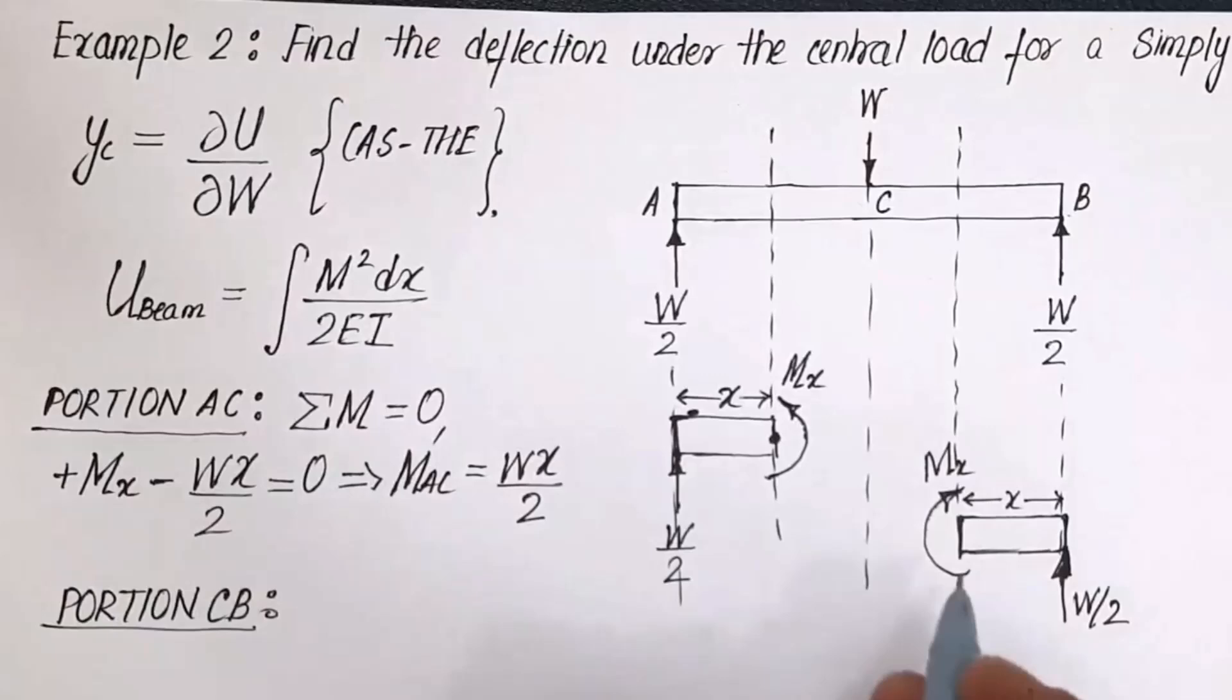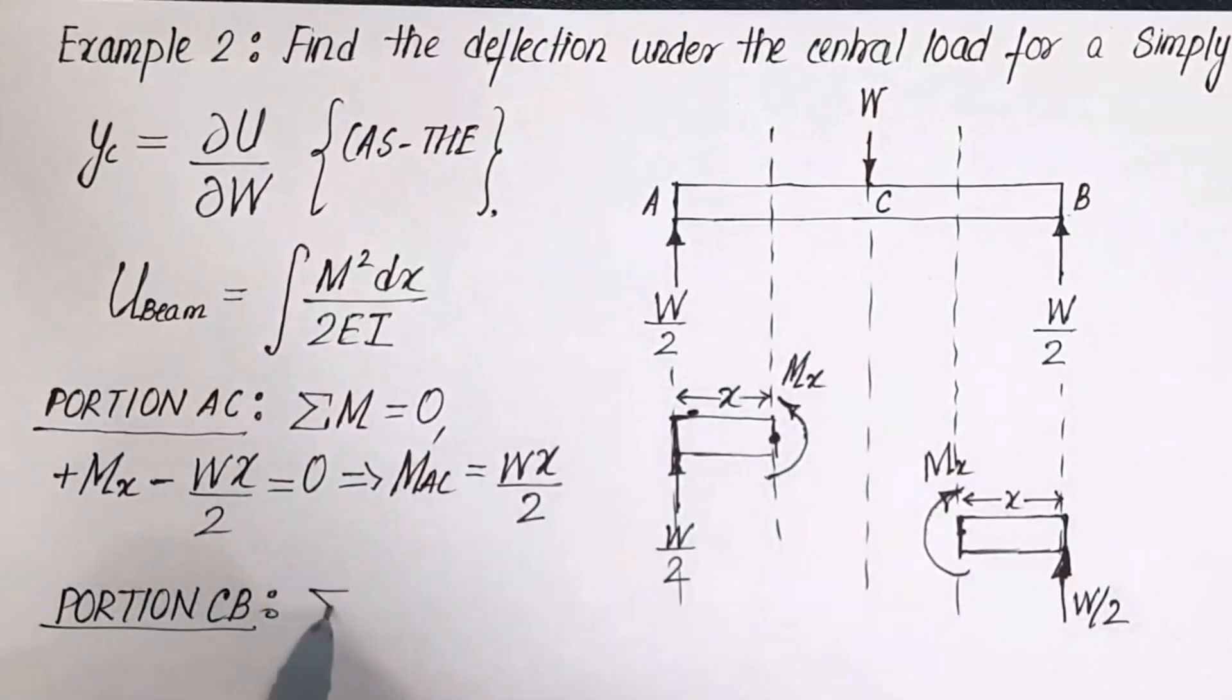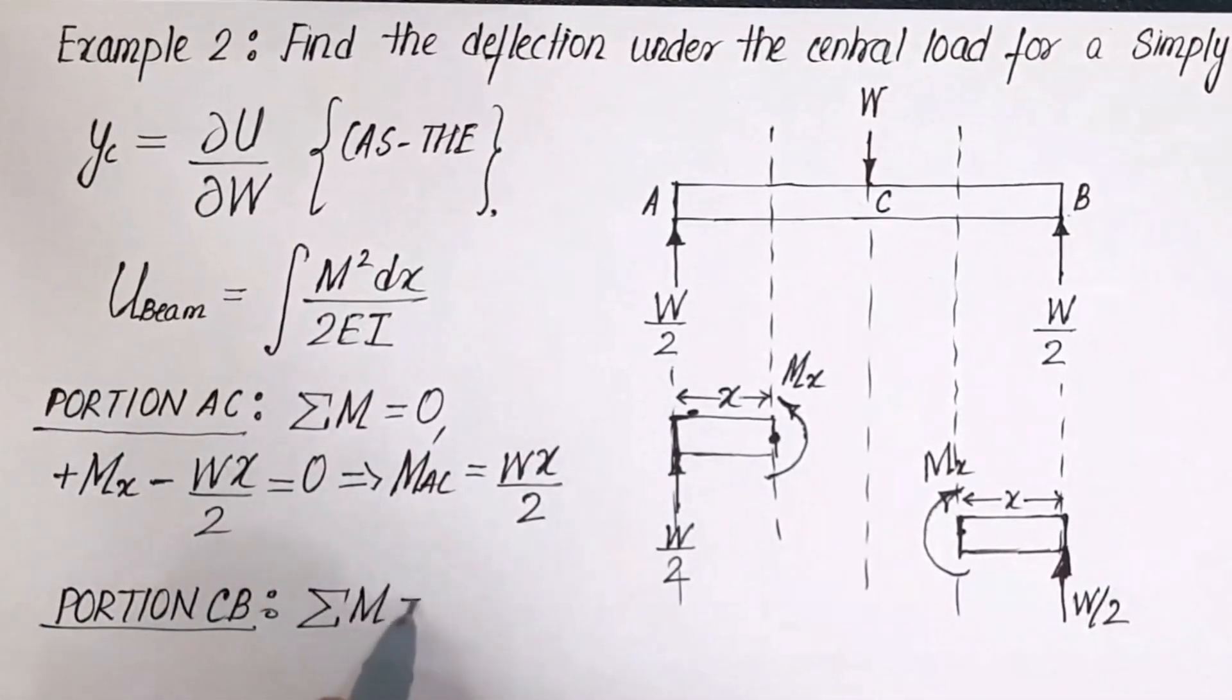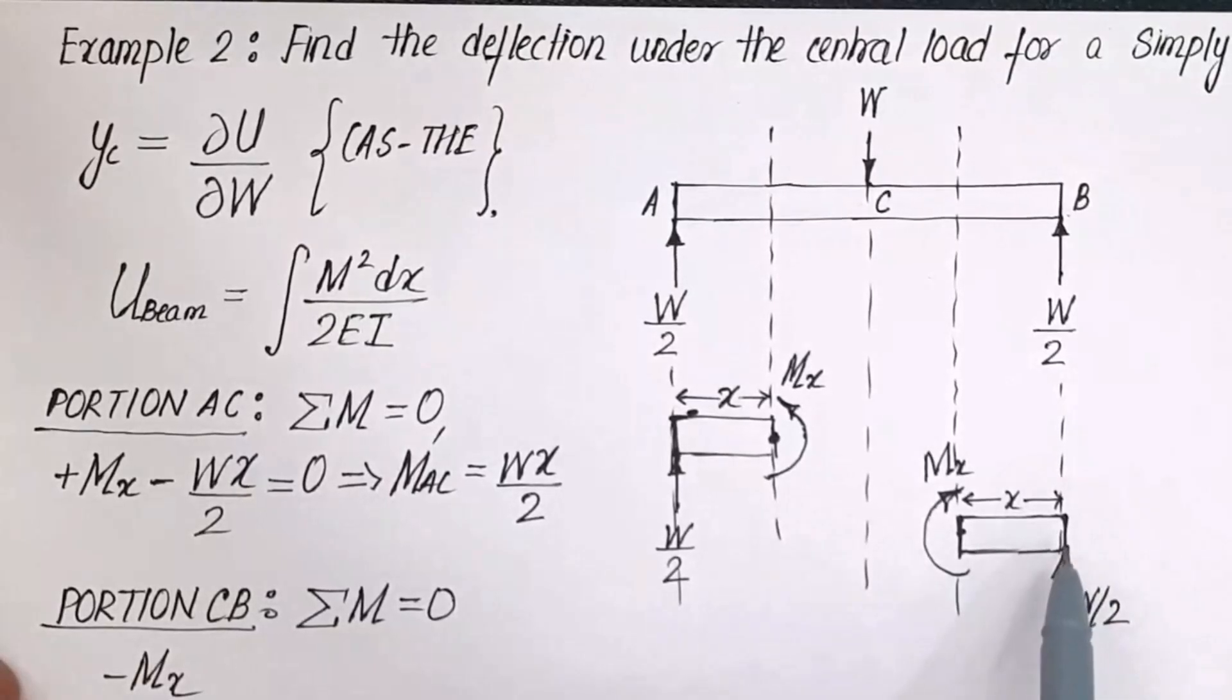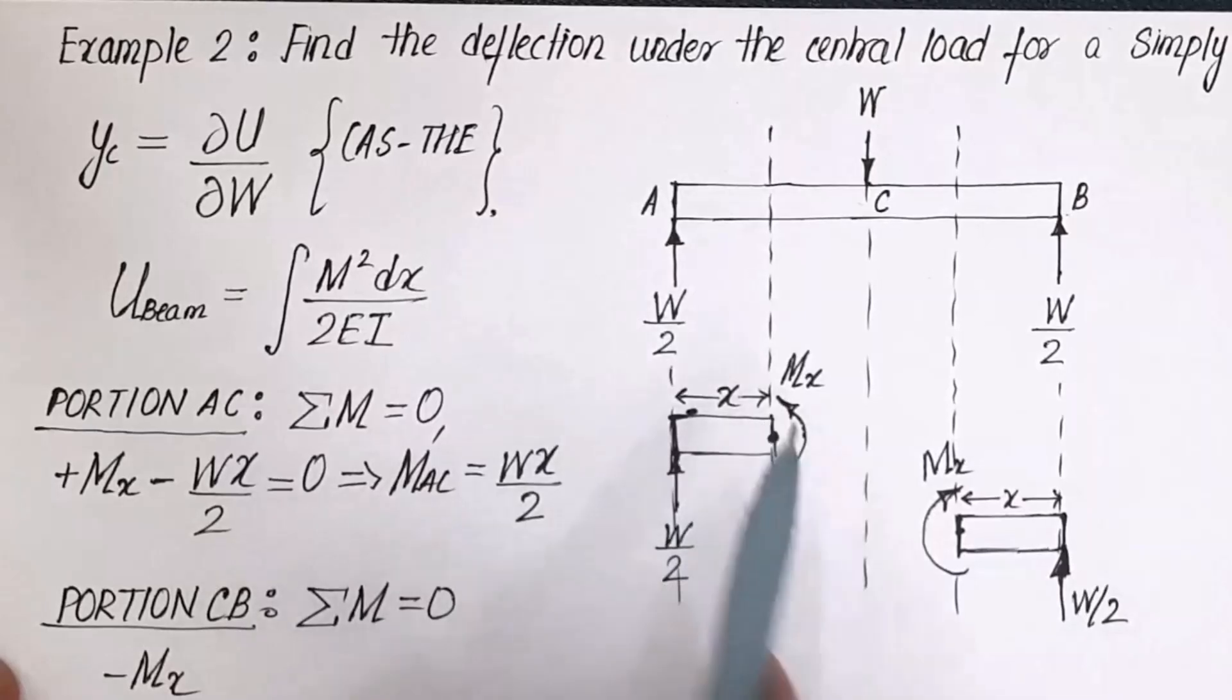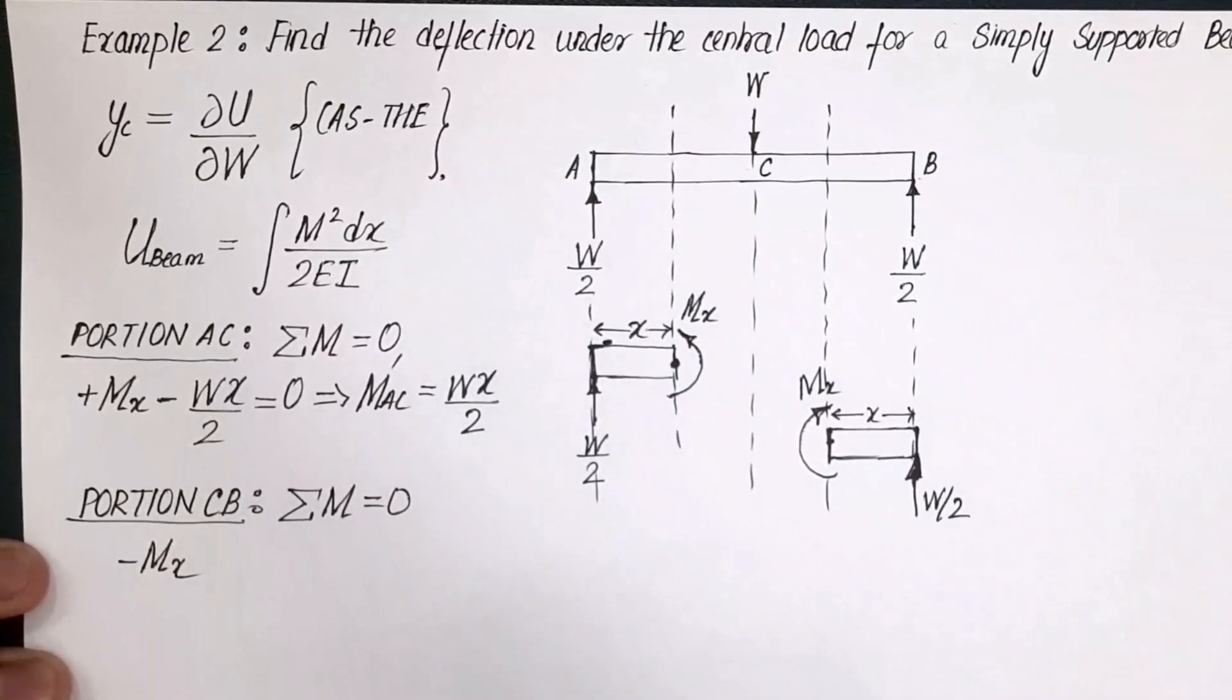Okay, so again, if you watch, let's go for moment is equal to 0 for this small part. M_x is clockwise, therefore minus M_x. And please note that whenever you take the section from the rightmost portion of the beam, moment is clockwise; from the left, anti-clockwise. That's a simple rule which you've got to remember.